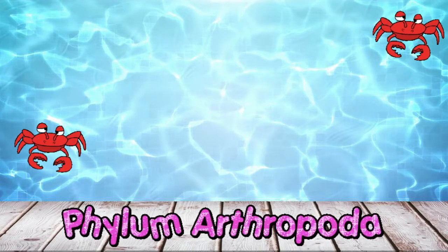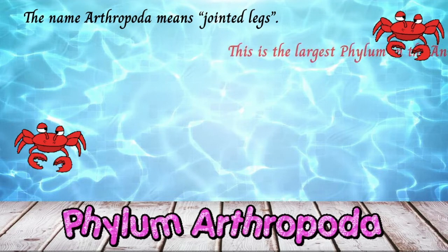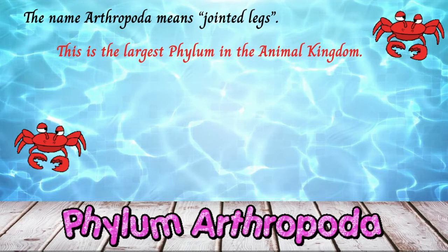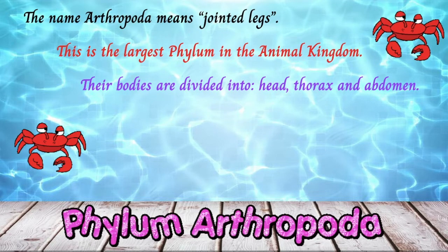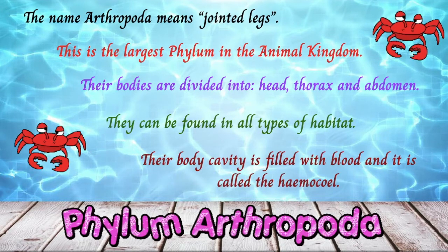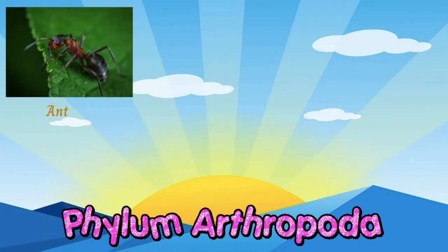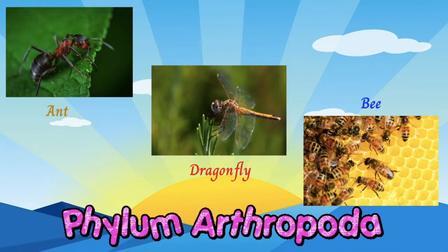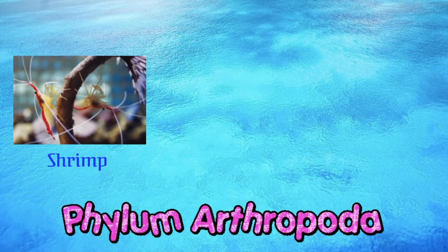Next we have phylum Arthropoda. The name arthropoda means jointed legs. This is the largest phylum in the animal kingdom — more or less about 84% of all known species of animals are members of this phylum. Their body is divided into head, thorax, and abdomen. They can be found in all types of habitats. The body cavity is filled with blood and is called the hemocoel, and the blood is white in color. Some examples are ants, dragonflies, bees, spiders, scorpions, centipedes, shrimps, crabs, and lobsters.